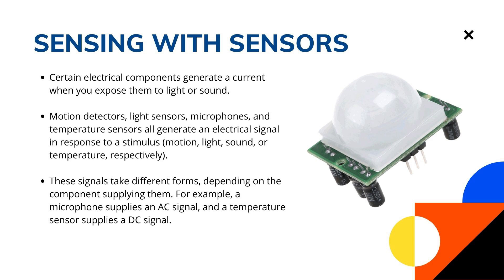You can use the electricity that is made, along with some parts that control electricity, to turn on or turn off electrical devices like light bulbs or speakers. Motion detectors, light sensors, microphones, and temperature sensors all send out an electrical signal when they detect a change in the environment, such as motion, light, sound, or temperature respectively.